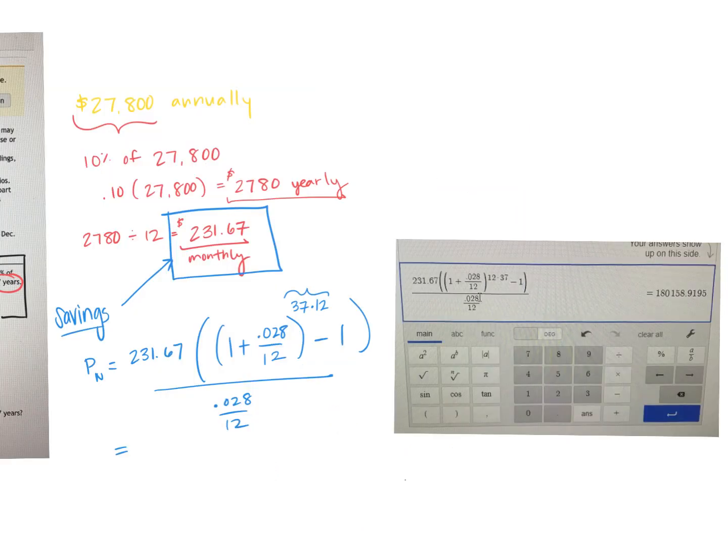So when we put that into our calculator, I would again strongly recommend that you use Desmos. I did approximate this, so if you did look at the answer key for this assessment, it might look slightly different because it's rounded, but I have that it should be about $180,158, and with rounding to the nearest penny, it should be 92 cents.